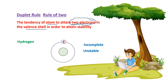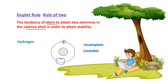Because hydrogen's outermost shell is incomplete — it has only 1 electron instead of 2 — hydrogen is unstable. Every atom has a tendency to become stable. So hydrogen will try to gain one more electron to complete its outermost shell. According to the duplet rule, or rule of two, hydrogen will accept one electron so that its outermost shell becomes complete and hydrogen becomes stable.